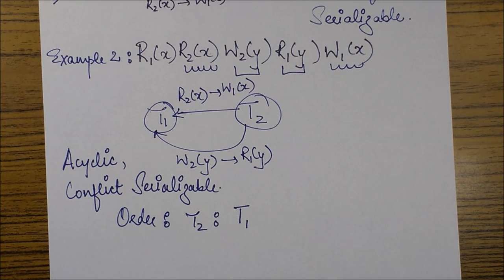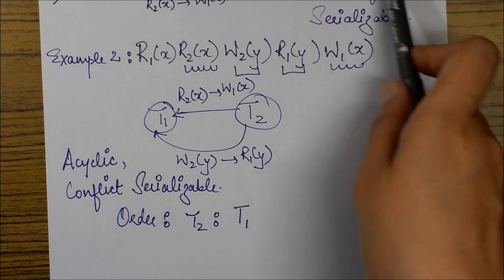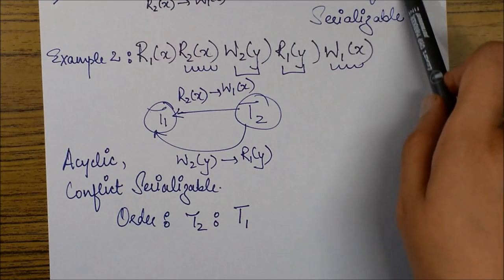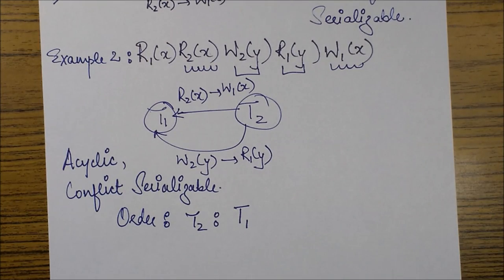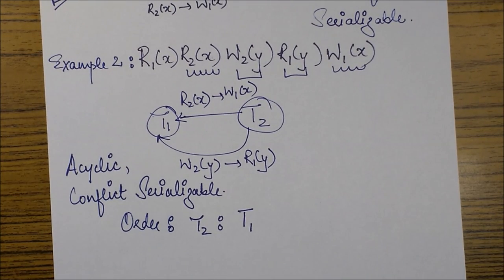So this is how we solve precedence graph method examples for various schedules. Hope you understood it clearly. We will be discussing about view serializability in the next session to deal with the problem of non-conflict serializable schedules. Thank you friends.